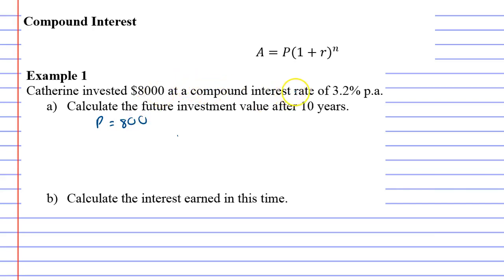At a compound interest rate, so little r is going to be 3.2%, which we get by 3.2 divided by 100, giving us 0.032 when we convert it to a decimal.